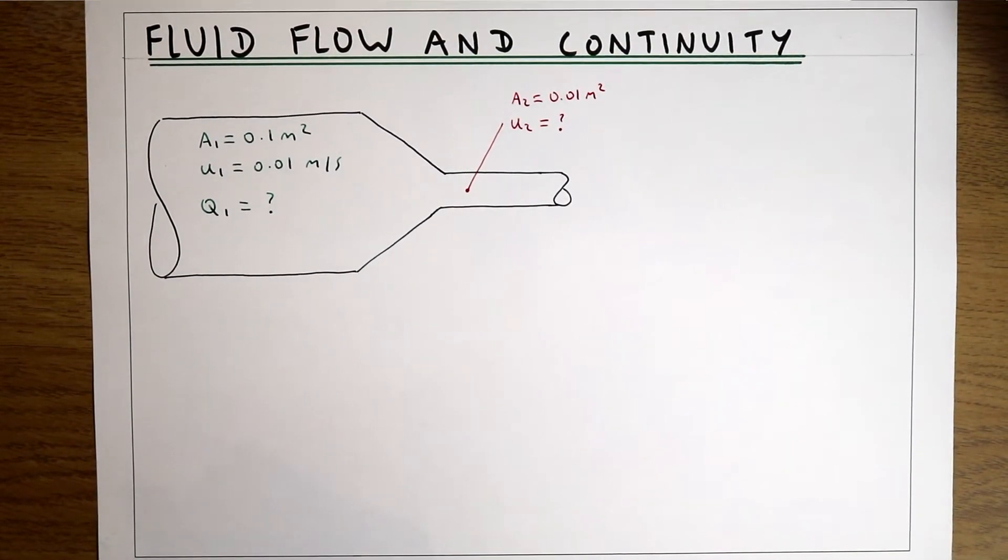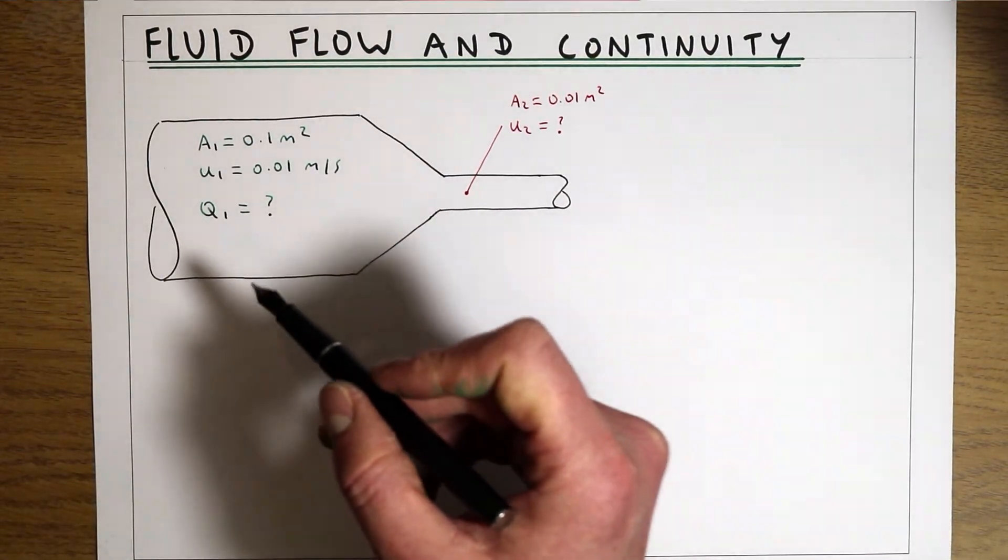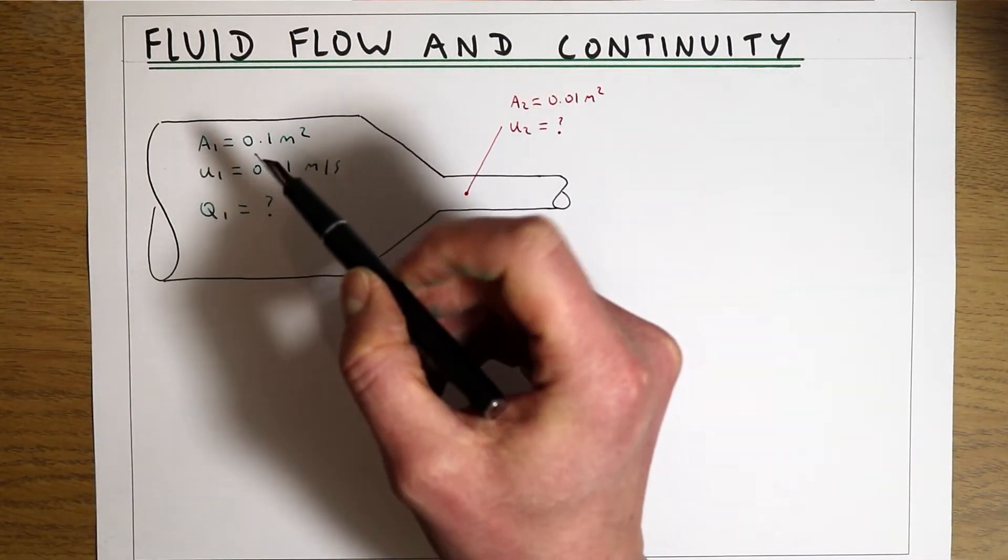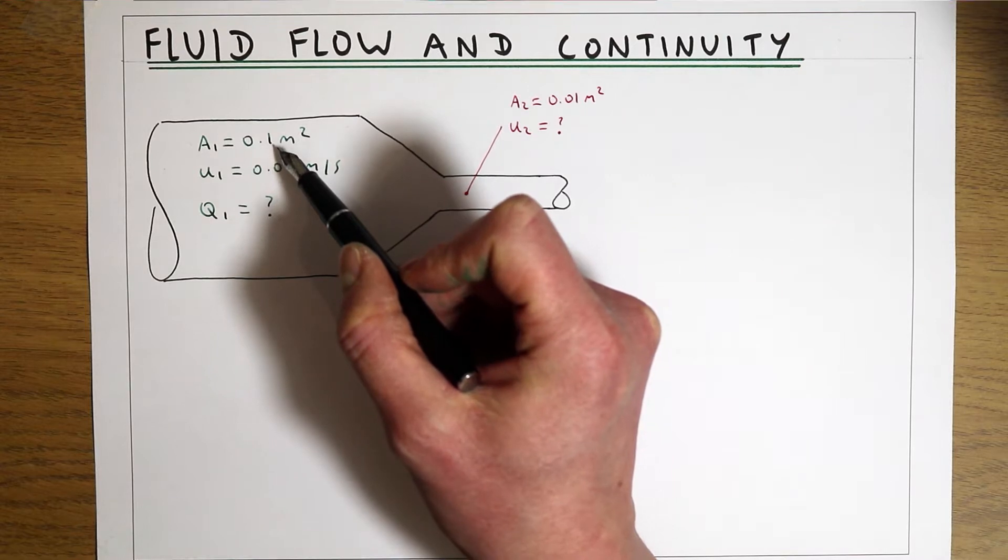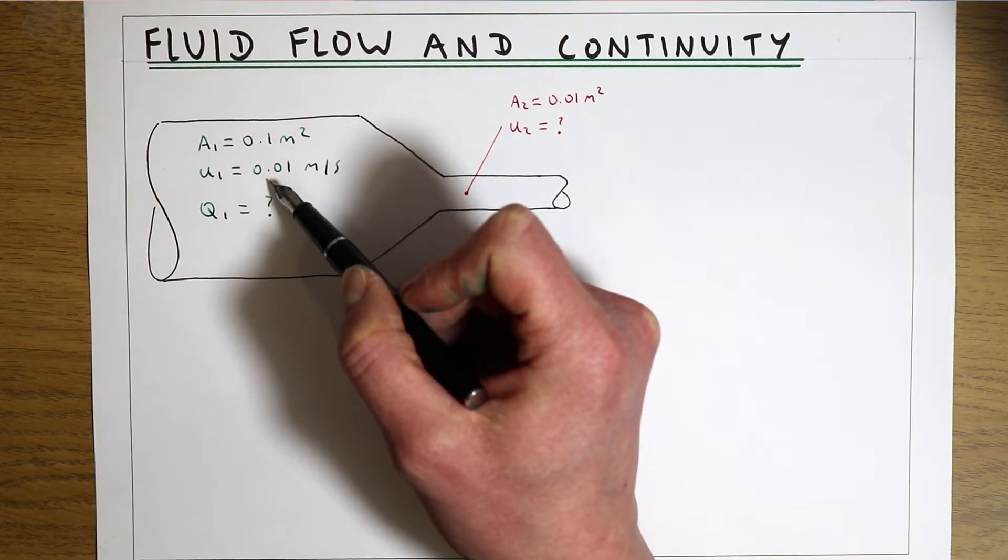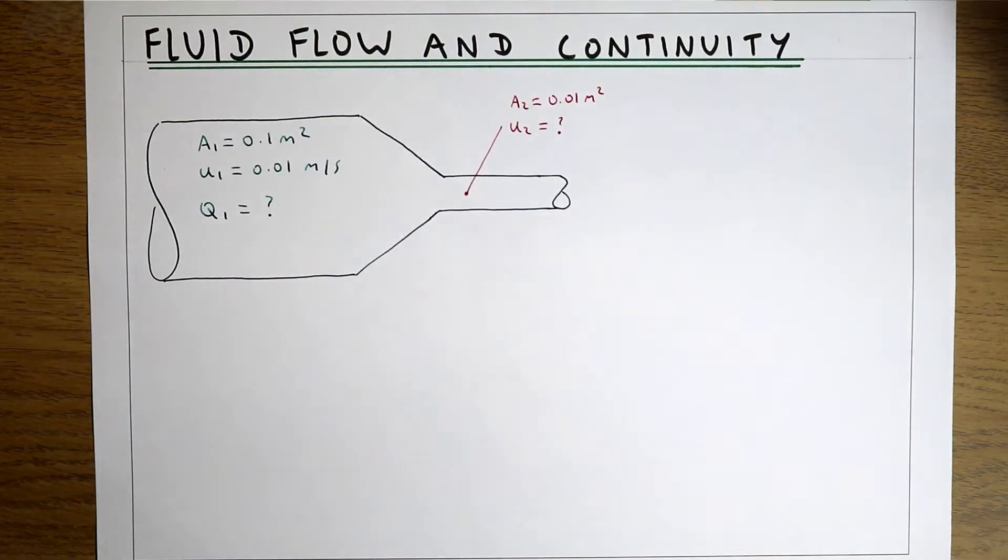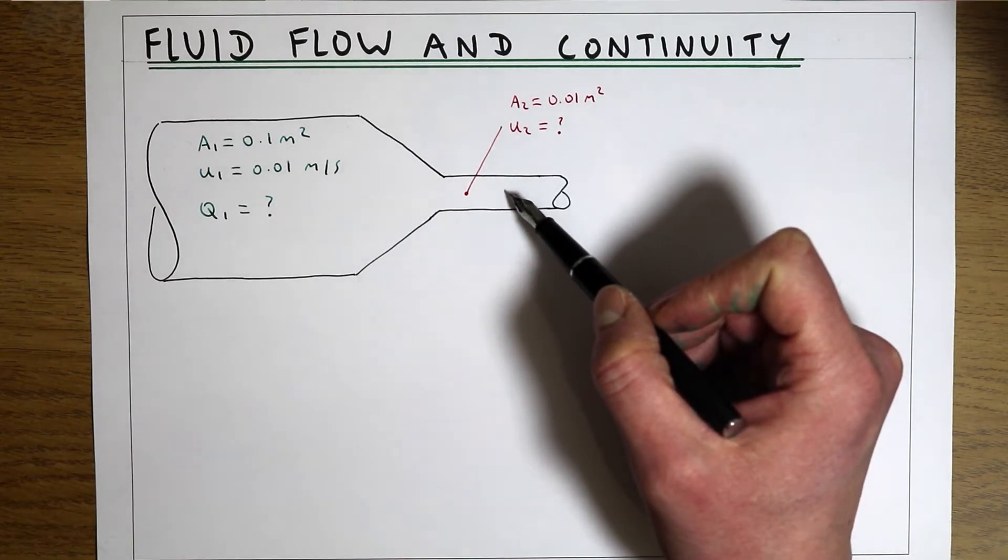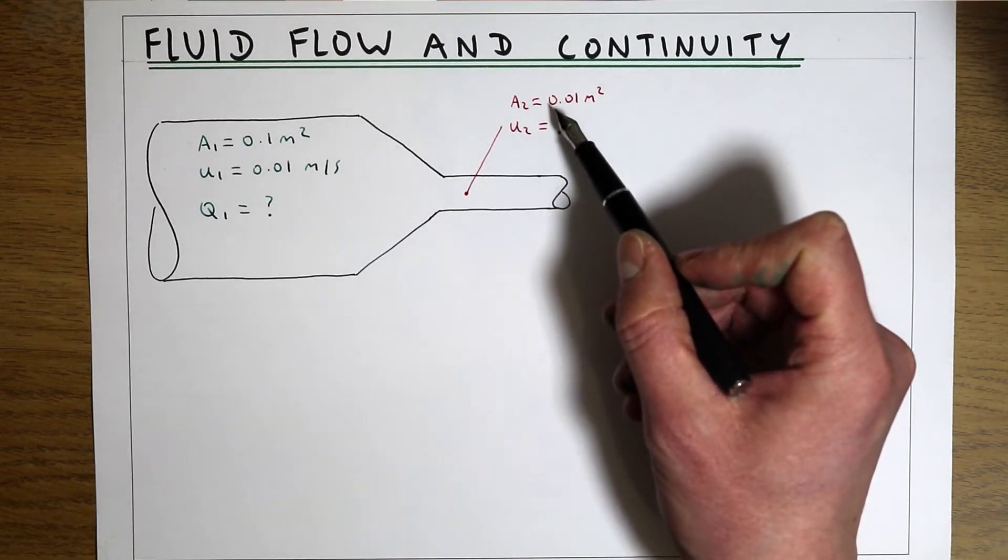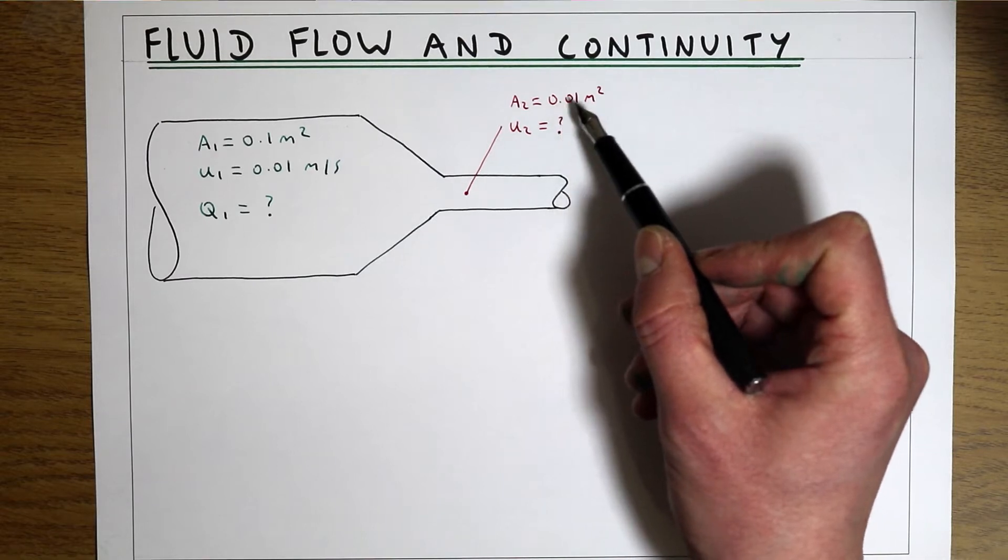In this example we've got a pipe with a flow going down it. The pipe starts out with a cross-sectional area of 0.1 m² and a mean velocity of 0.01 m per second. Then the diameter of the pipe is reduced to a new area of 0.01 m².